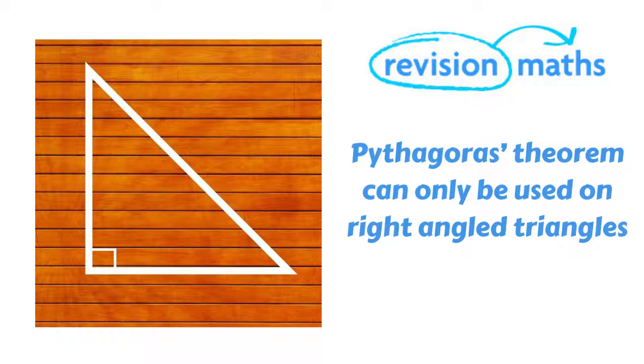The main rule to remember for using Pythagoras Theorem is it can only be applied on right angled triangles. So make sure the triangle has a 90 degree angle like the triangle on the screen.